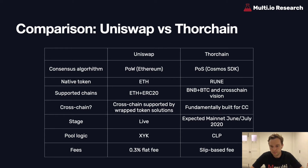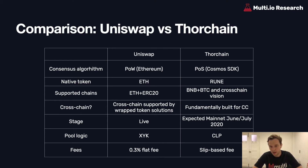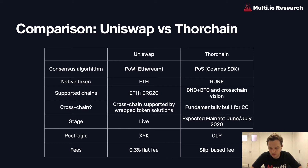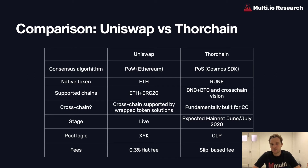ThorChain uses an approach called continuous liquidity pool, which incorporates a slip-based fee. This slip-based fee means that traders are penalized for causing a larger slippage. For example, if a trade causes 3% slippage in a pool, the trader pays a higher fee than if it caused only 1% slippage. Another difference is that Uniswap's flat fee model makes it relatively prone to price manipulation. Neither protocol requires an oracle; however, Uniswap's fee model makes it quite cheap to manipulate prices, whereas the slip-based fee aims to make manipulation considerably more expensive for a bad actor.